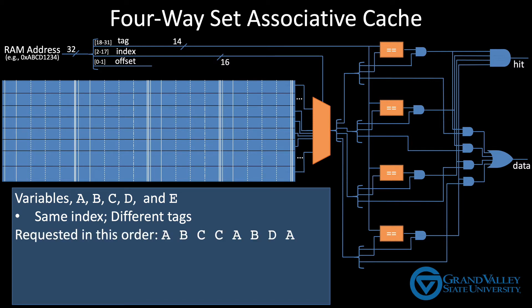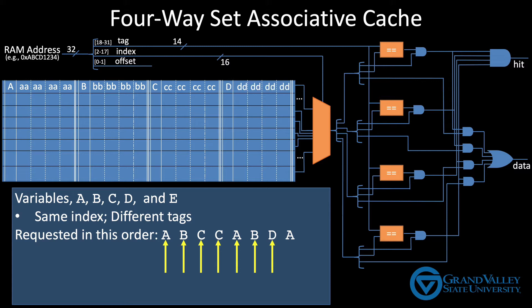As each variable is requested for the first time, it's placed in the cache. For example, when we run across that first line of code that requests A, A is loaded into the cache. Then when we request B for the first time, it's loaded in the cache, and C. But when we request C the second time, that's a cache hit, so no new data is loaded. Likewise, when we access A and B a second time, but when we access D, it needs to be loaded in the cache.